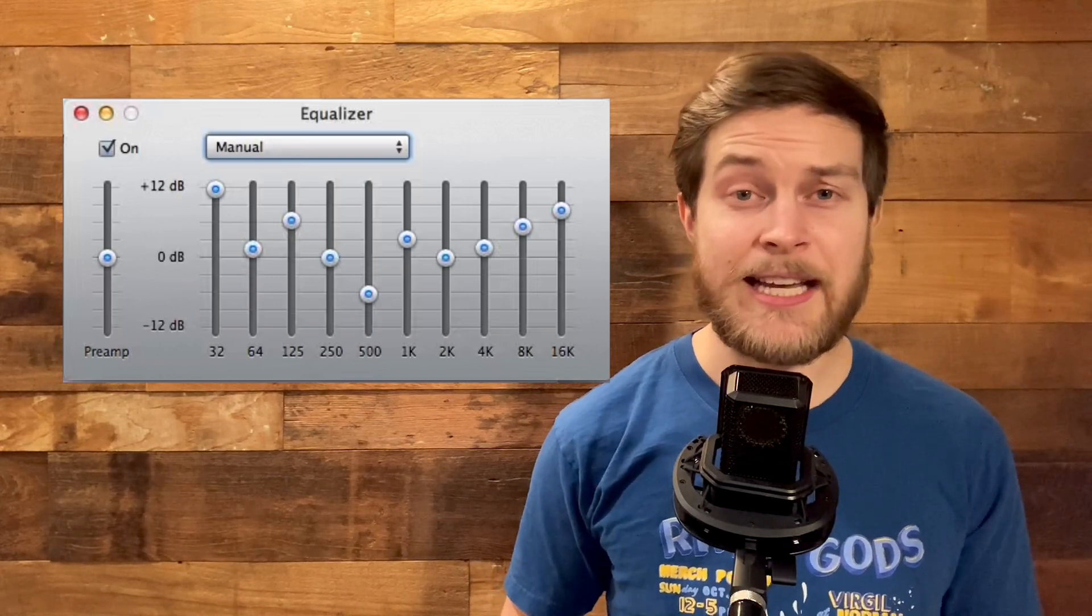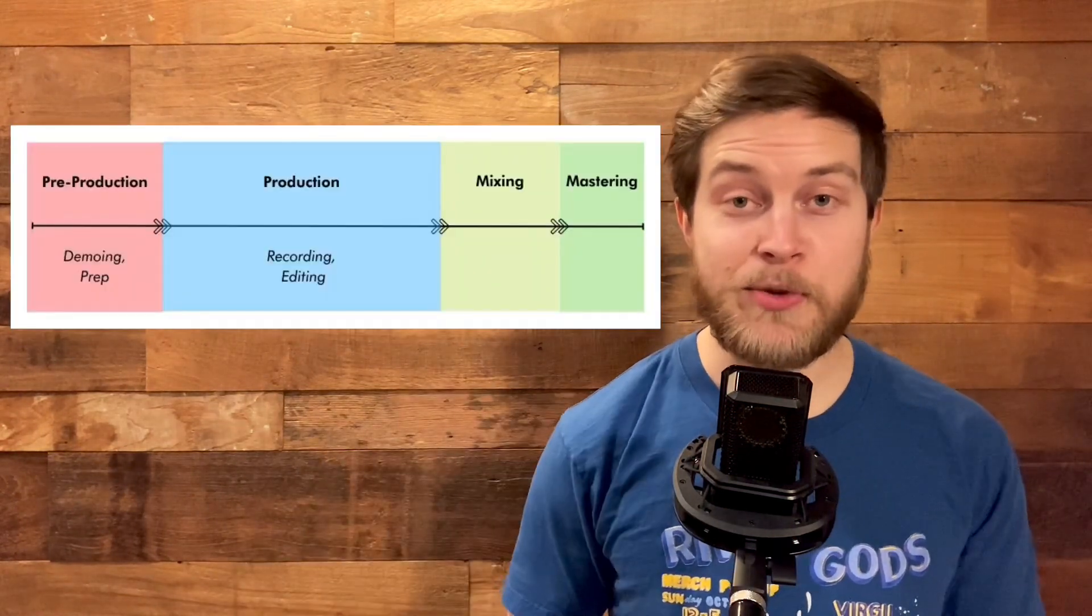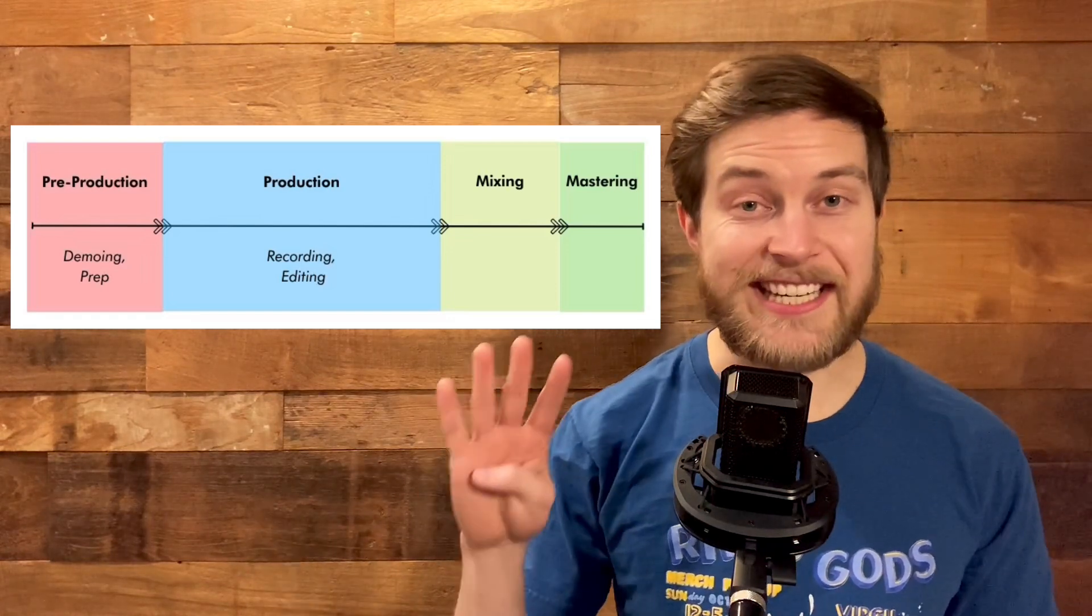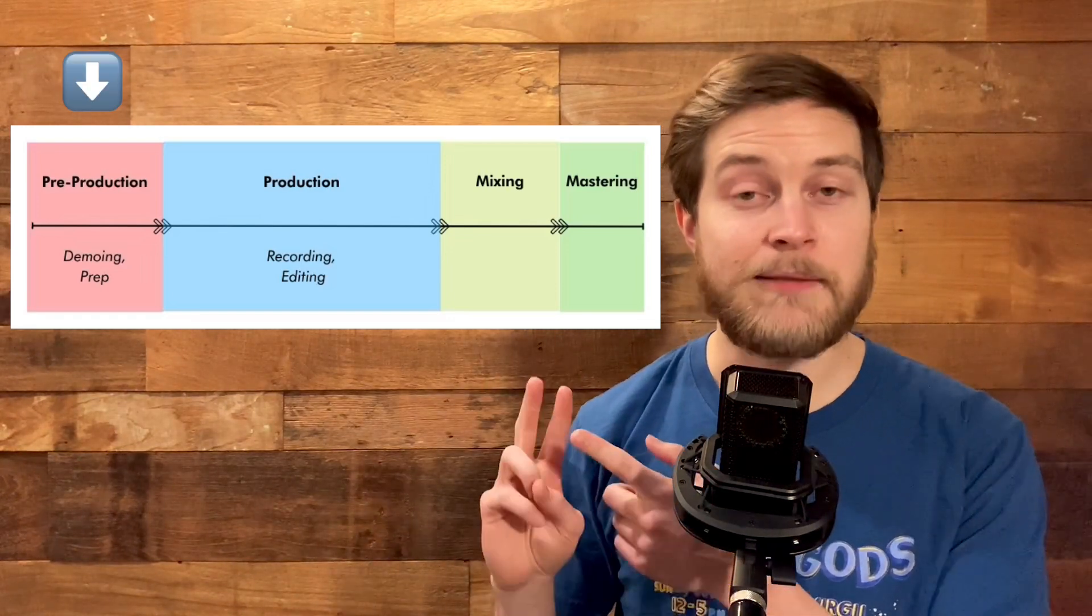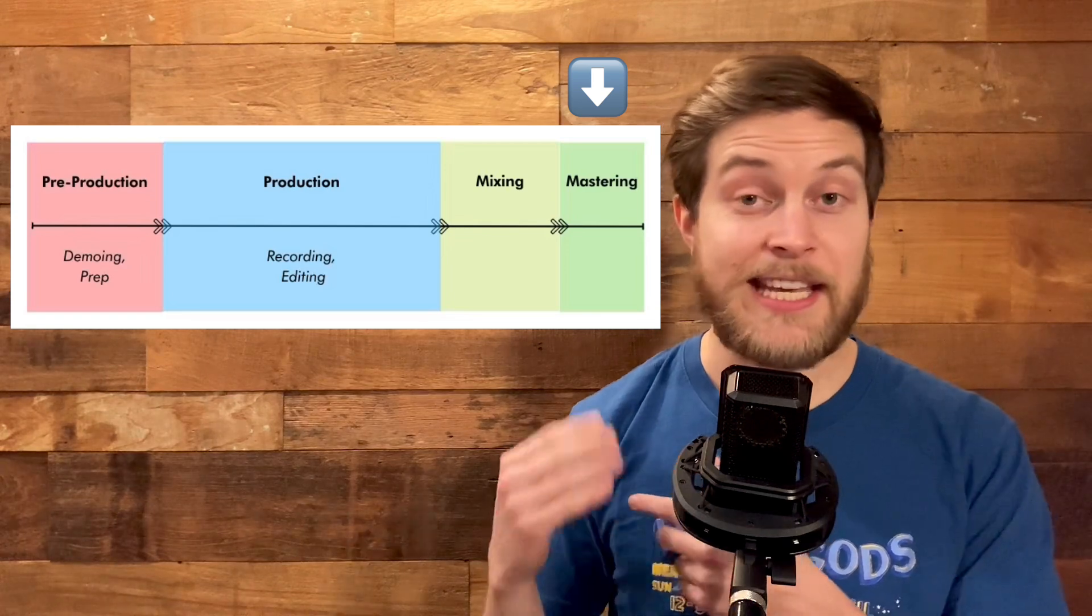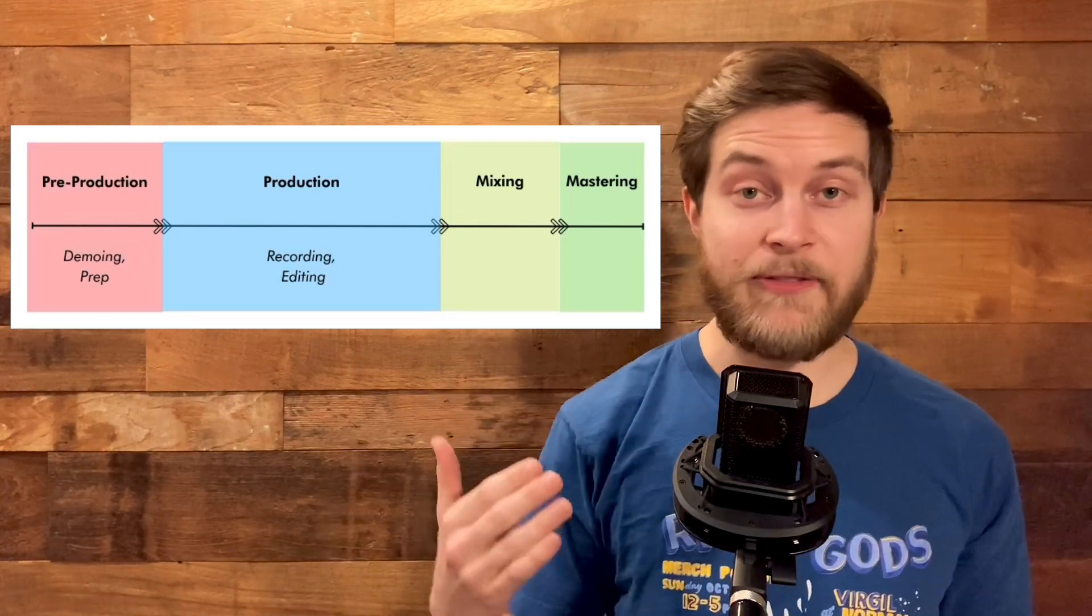They are used in every stage of the music production process. What do I mean by that? Music is produced over four distinct stages: pre-production, production, mixing, mastering. EQ as a tool can be found in each one, maybe not as much in pre-production, but constantly during the other three.